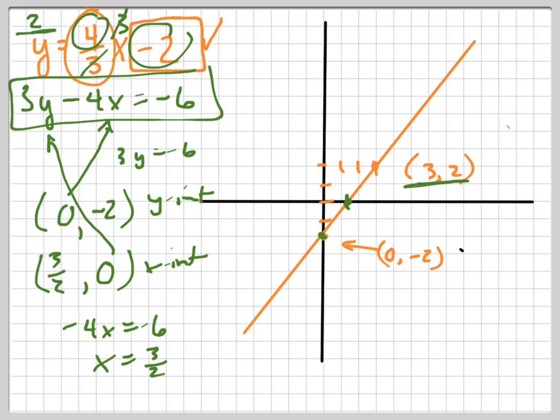You see how that looks like 1 and 1/2 right there? Well, let's find out. Let's find out if (3, 2) is also on this green line. Let's plug in 3 for x and 2 for y. 6 minus 12, it does equal -6. So that point's on the line also.